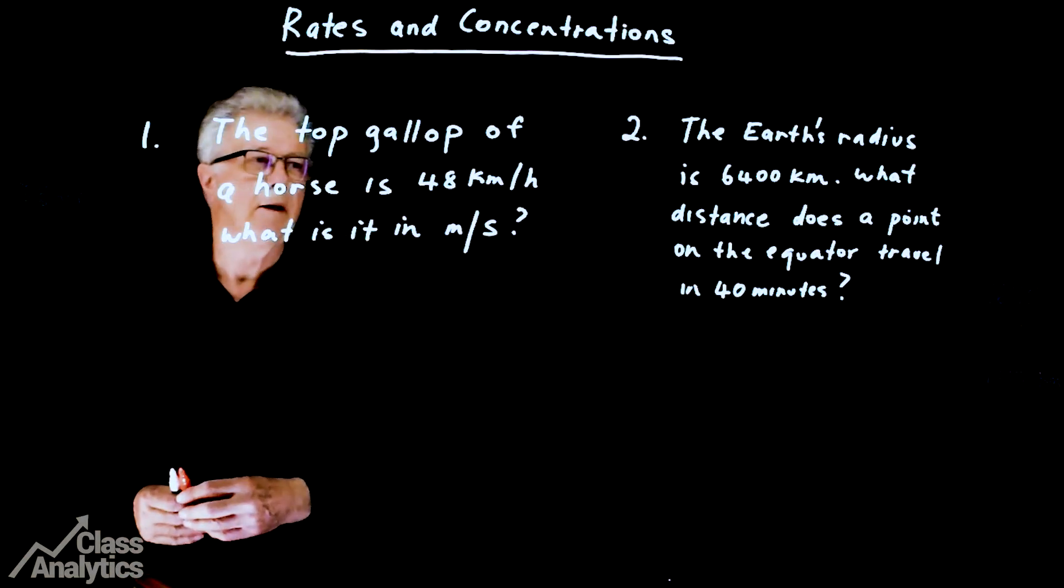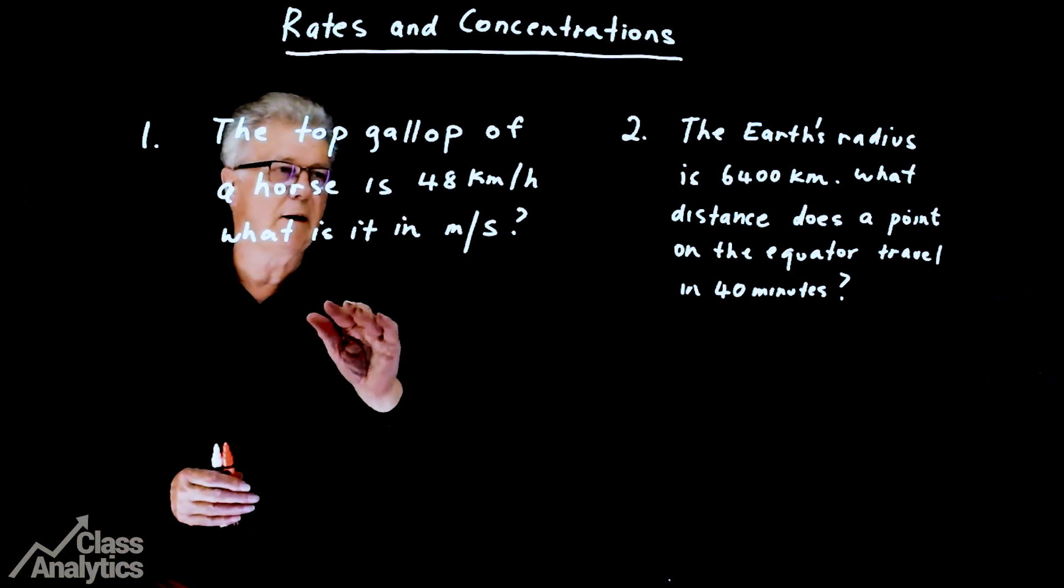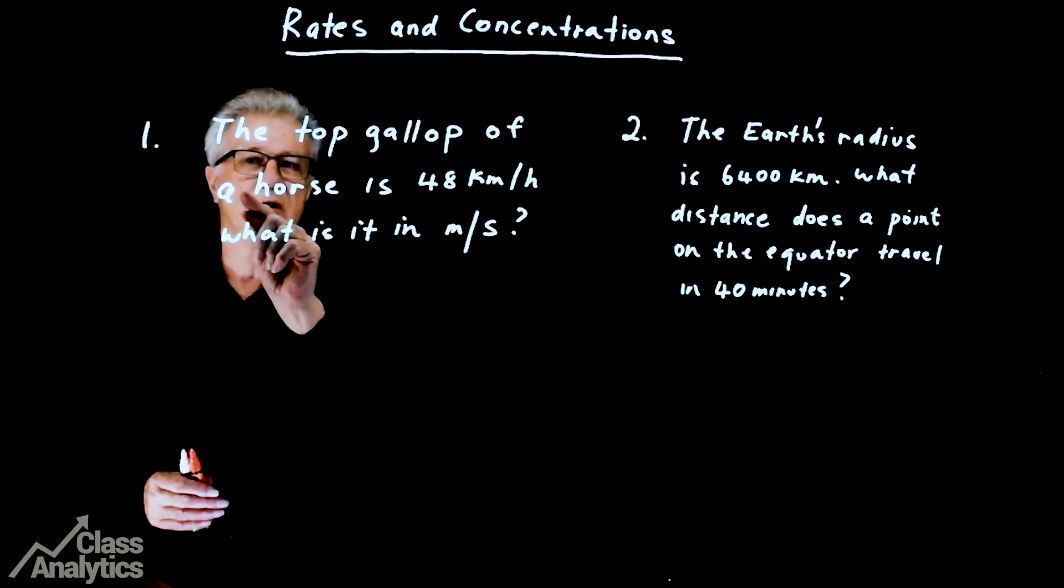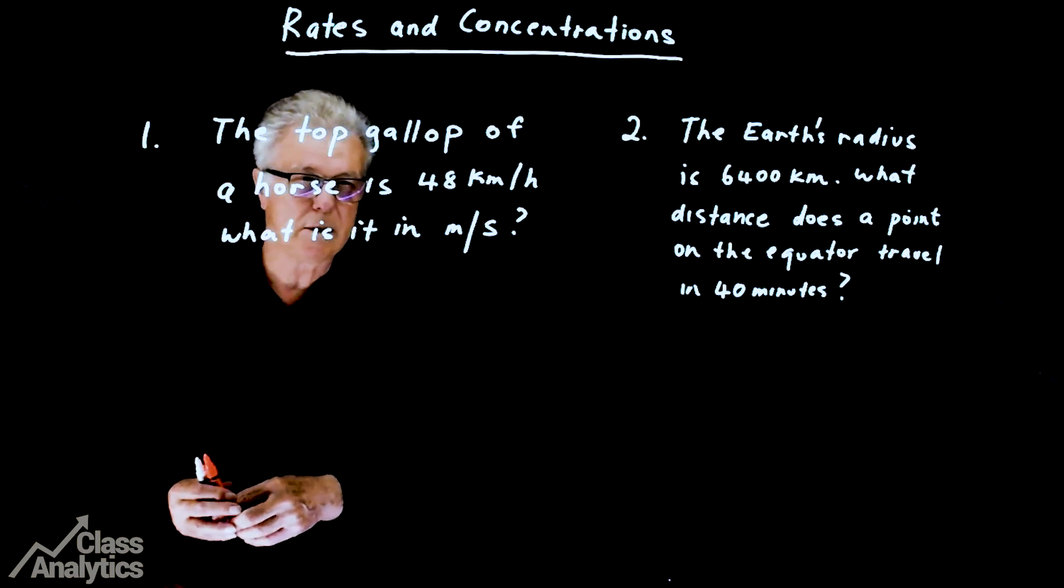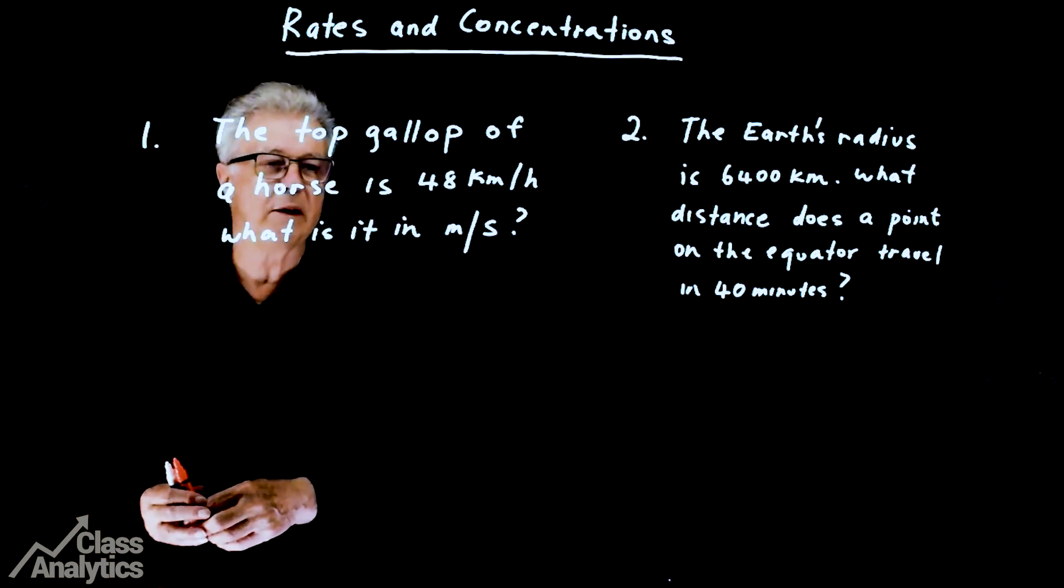Rates and concentrations. We've got four questions all together, starting off with these two. The first one, the top gallop of a horse is 48 km per hour. What is it in metres per second?